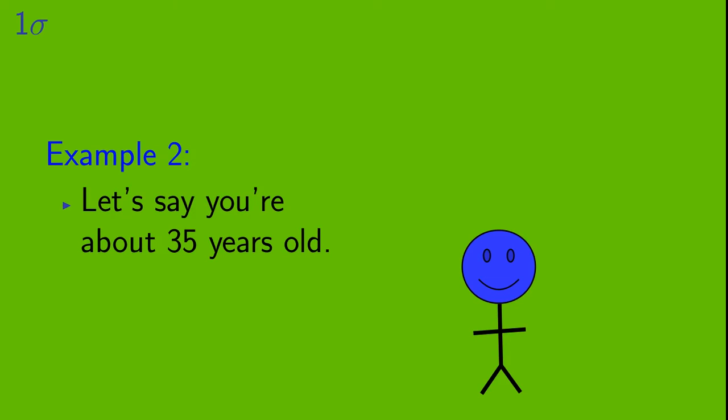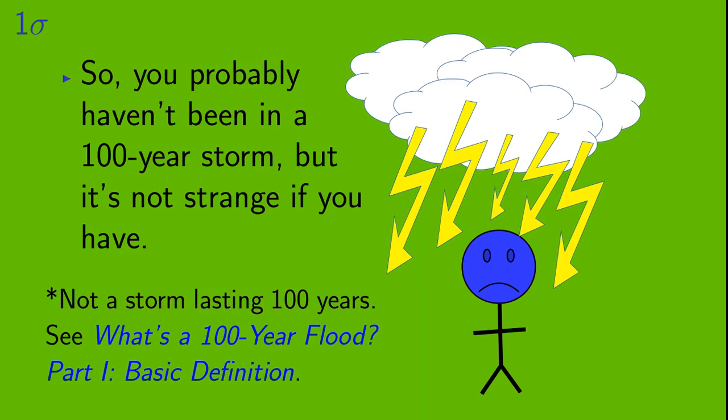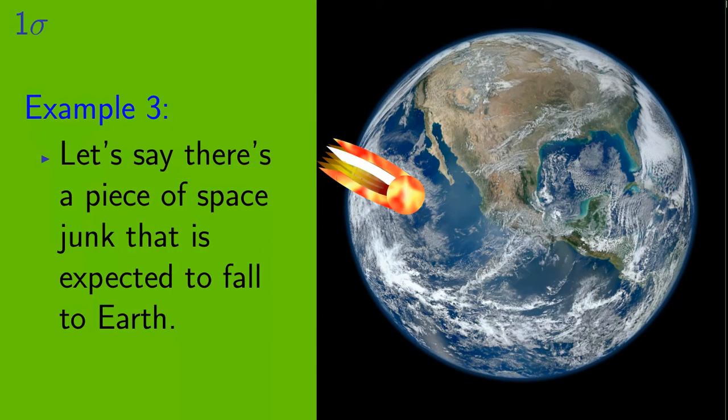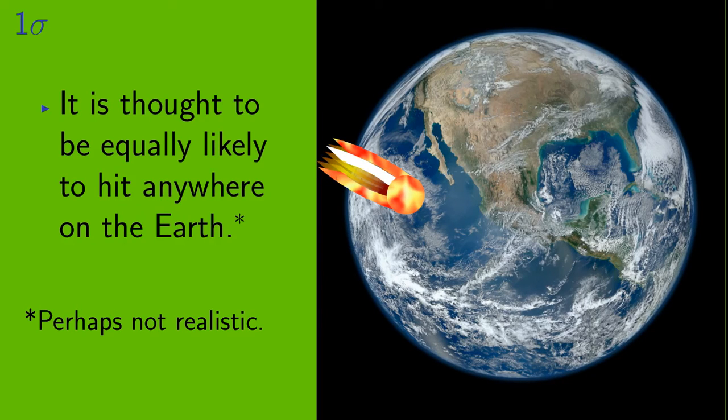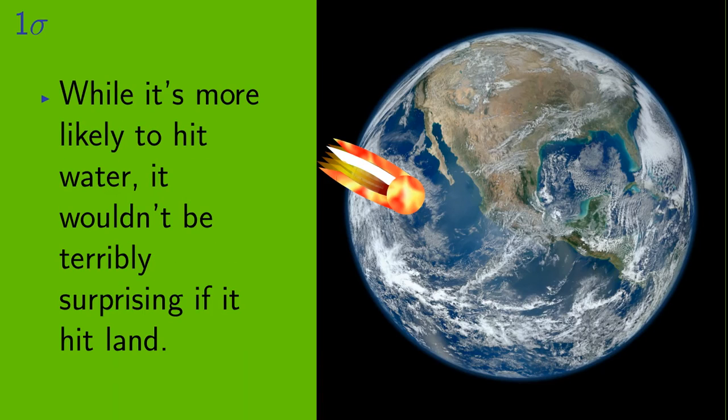Okay, example 2. Let's say that you're about 35 years old. There's about a 30% chance that during a chosen 35 year interval, the place where you live will experience at least one 100 year storm. So you probably haven't been in a 100 year storm, but it's not strange if you have.